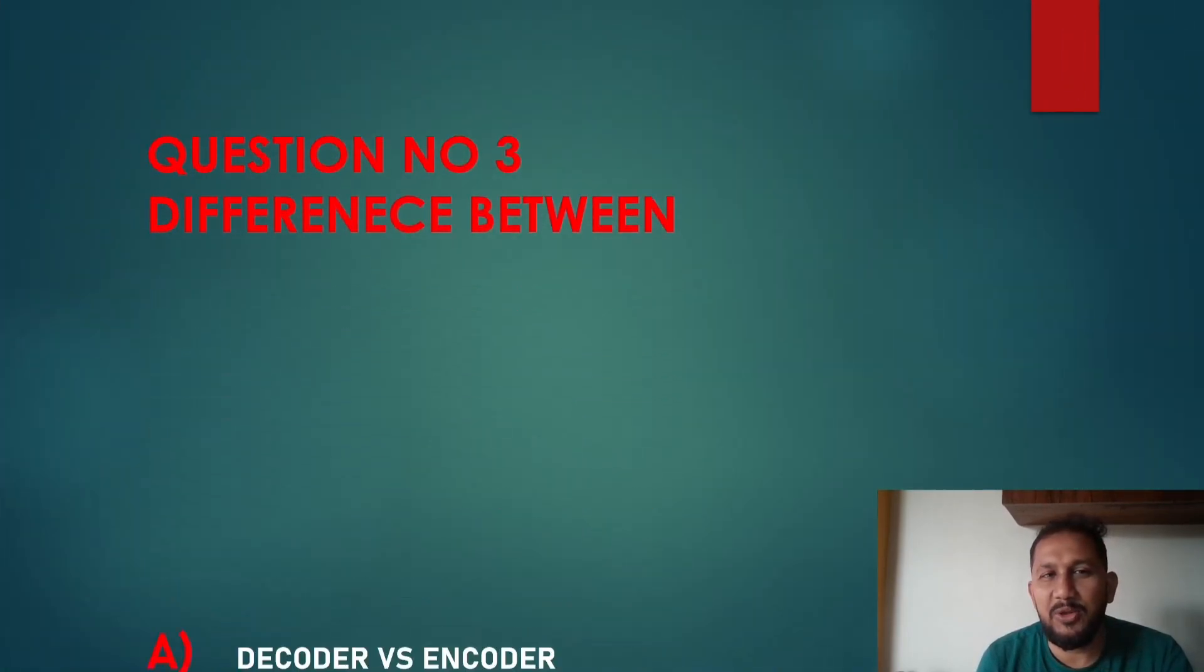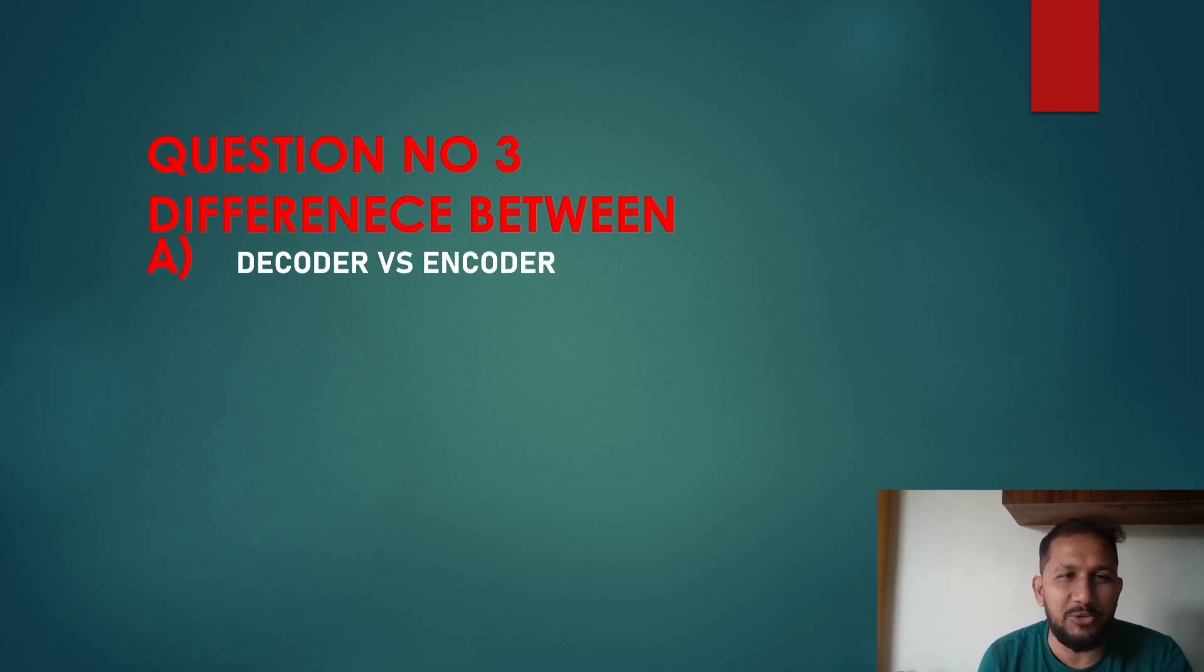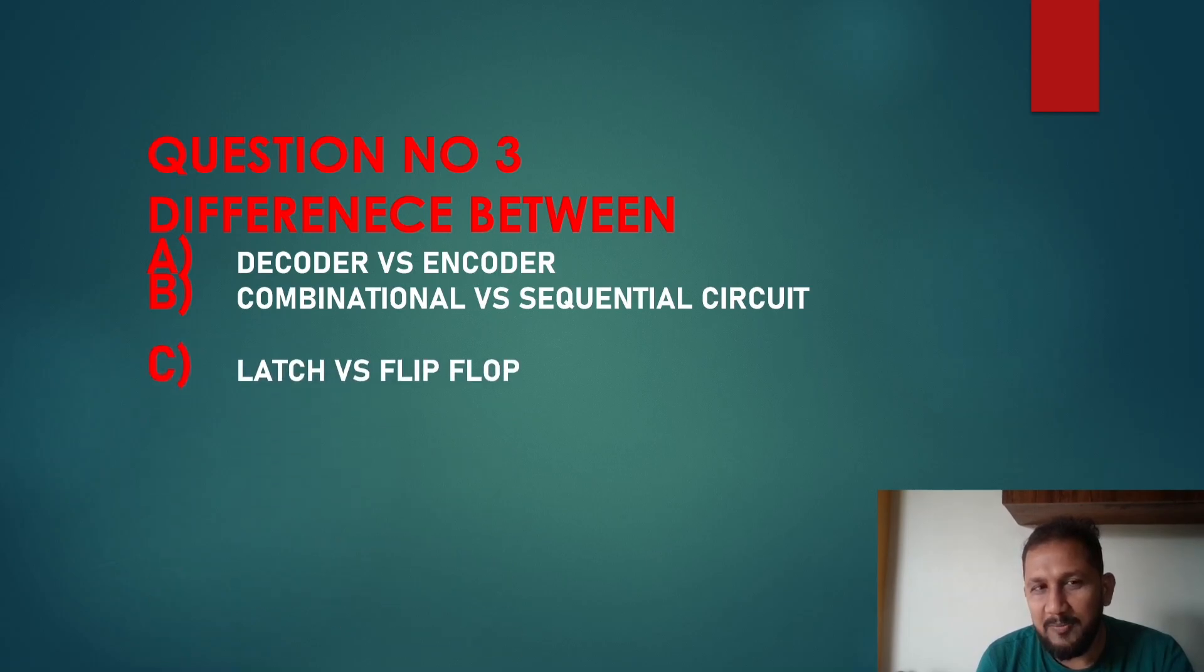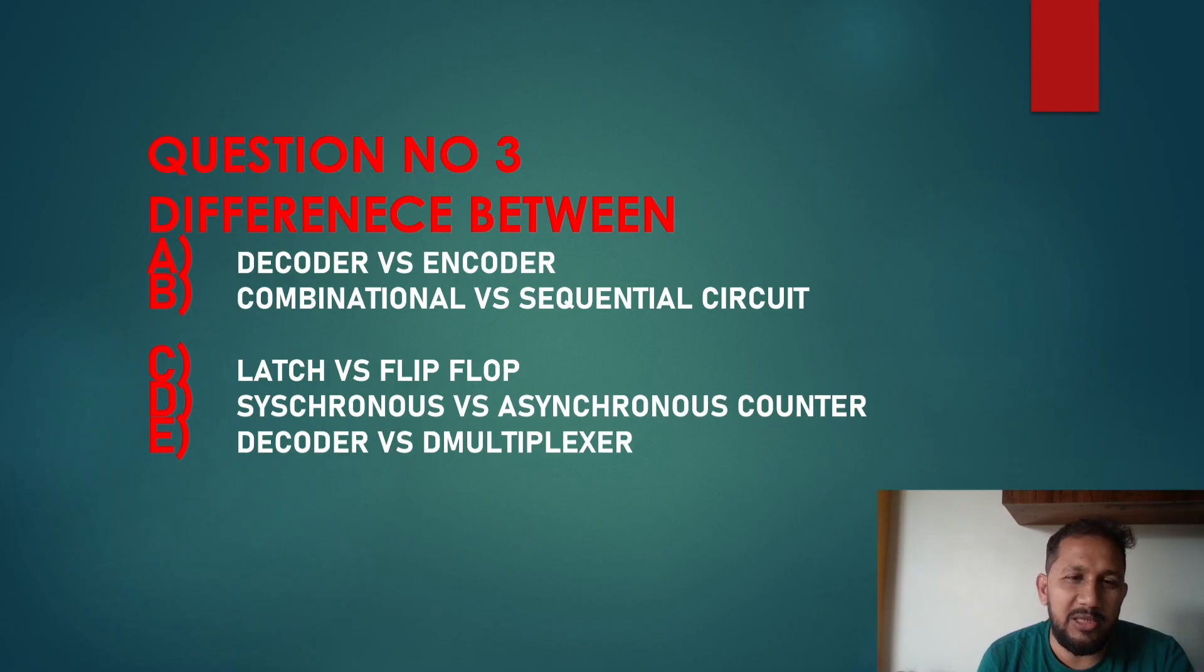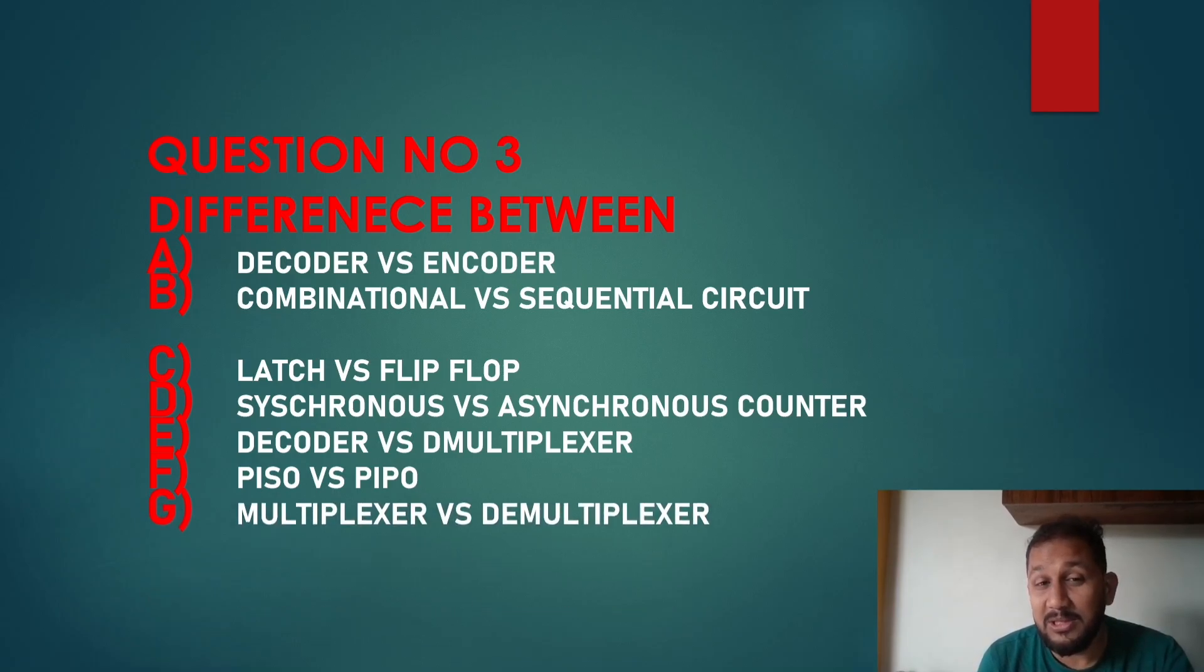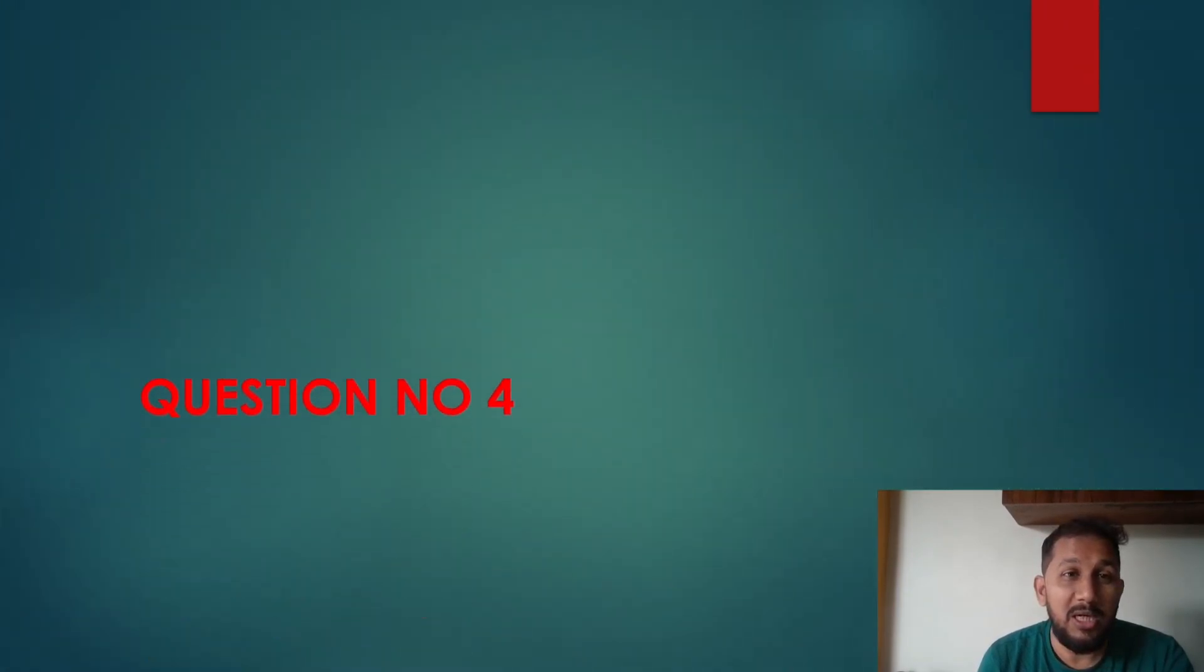Question number 3. Difference between decoder versus encoder, equal 3 to 4 marks question, definite definite code. Combinational versus sequential circuit. Latch versus flip-flop. Synchronous versus asynchronous counter. Decoder versus demultiplexer. PISO parallel in serial out, parallel in parallel out. Multiplexer versus demultiplexer.